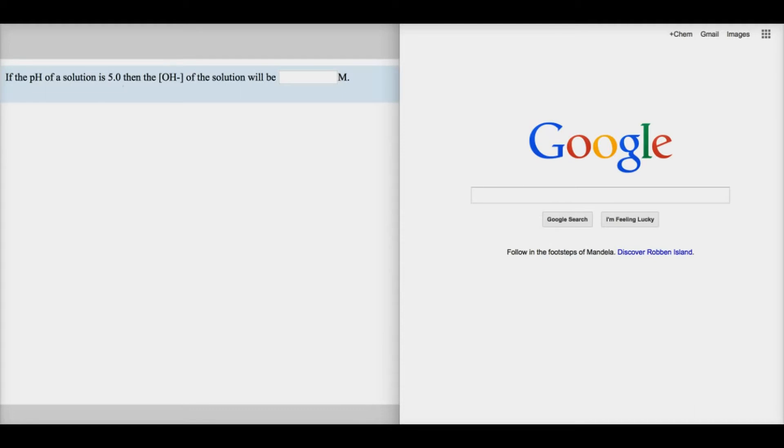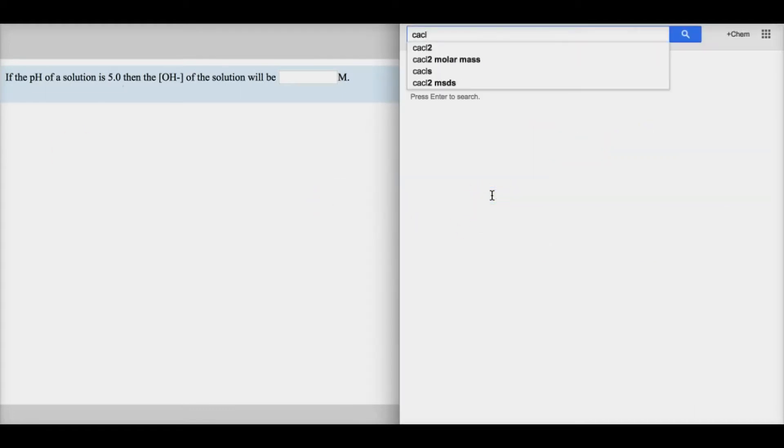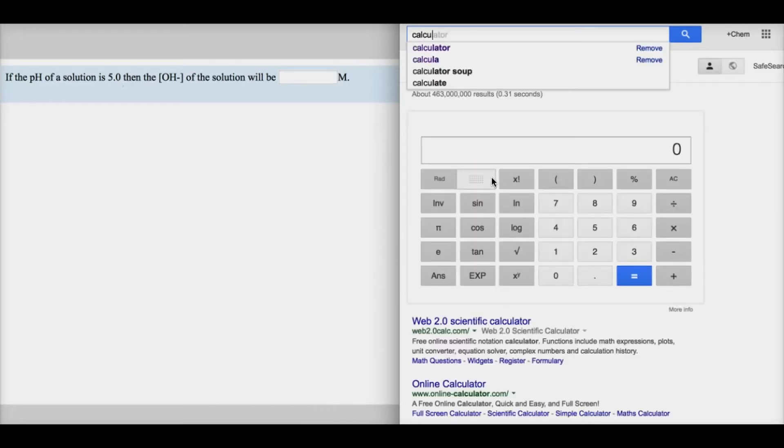So let's go ahead and type in the word calculator into the Google search engine, and here is your Google calculator on the right. On the left we have a problem that was from one of the assignments in Moodle. It says if the pH of a solution is 5.0, then we need to figure out the OH- concentration.